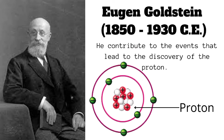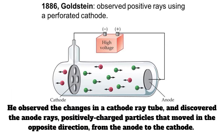In 1886, Goldstein helped contribute to the events that led to the discovery of the proton. He observed the changes in a cathode ray tube and discovered the anode rays — positively charged particles that moved in the opposite direction, from the anode to the cathode. His work helped Rutherford contribute to the events that led to the discovery of the proton.